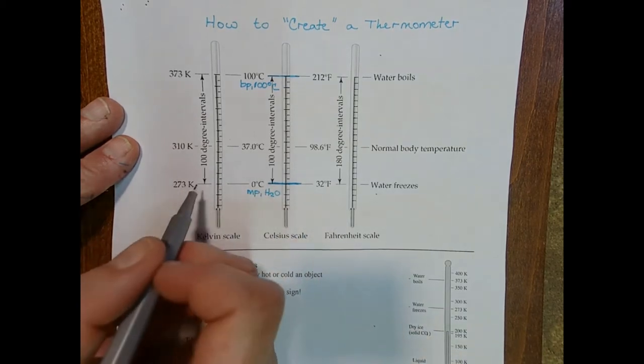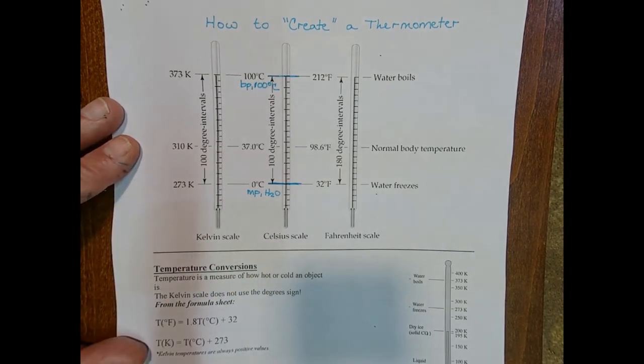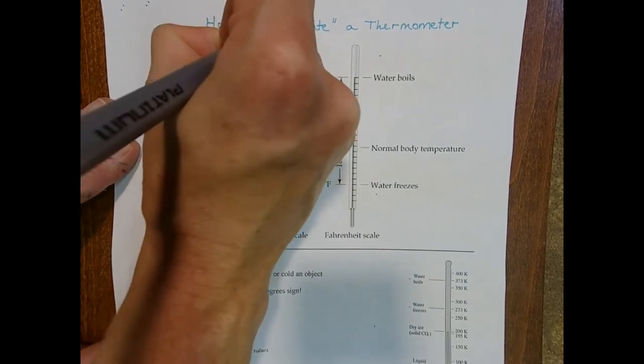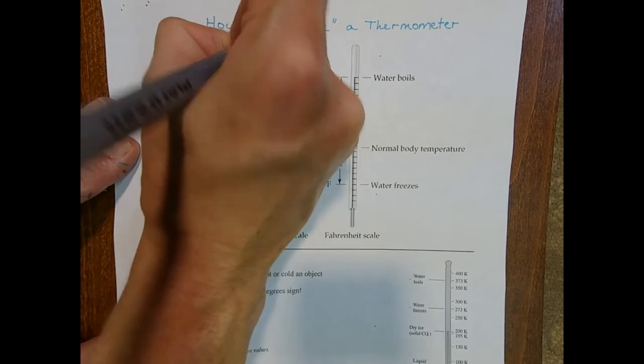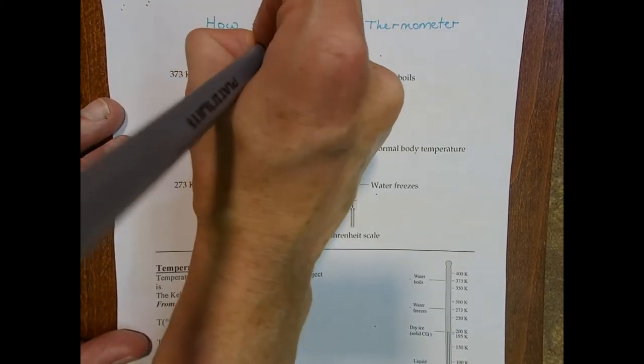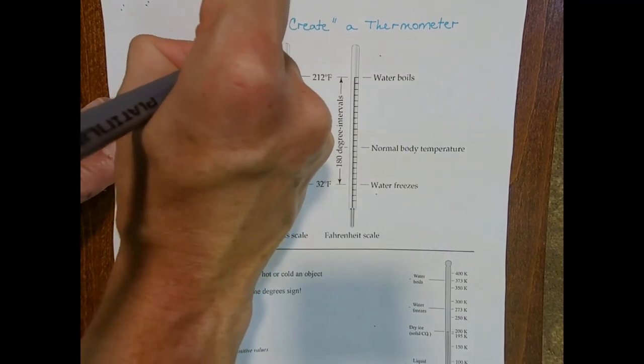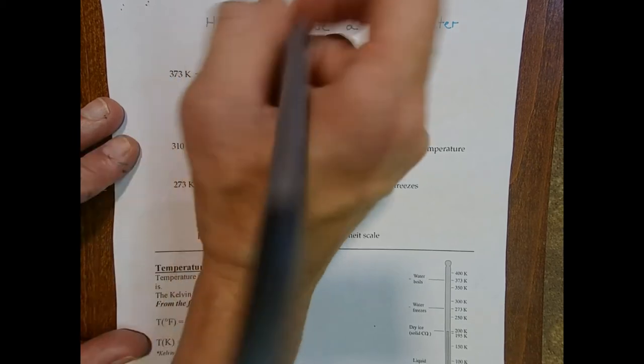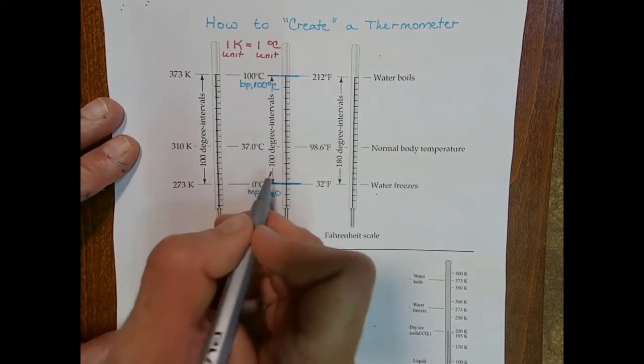The Kelvin scale has the same size segment. So this is really important to know that one Kelvin is equal to one degree Celsius. Not that one in temperature, but one unit of Kelvin is equal to one unit in degrees Celsius. And you can see that in the image. The lines look the same.